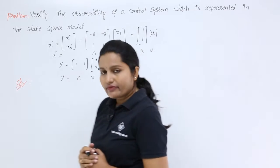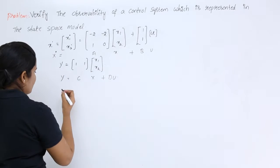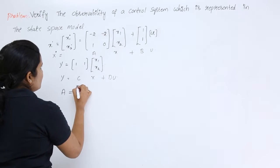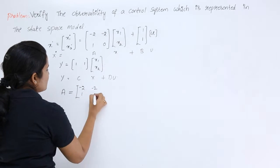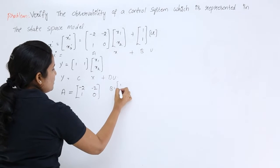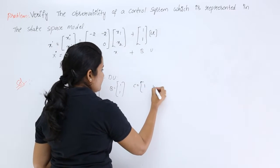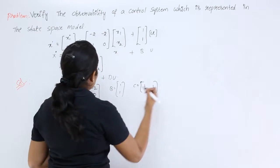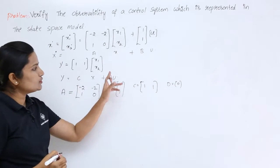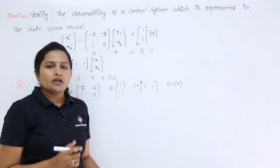Comparing the given state model with the standard state model, we get: A = (minus 2, minus 2; 1, 0) and B = (1; 1). C = (1, 1) and D = 0, because there is no D·u term in the given model, so we simply take D equal to 0.